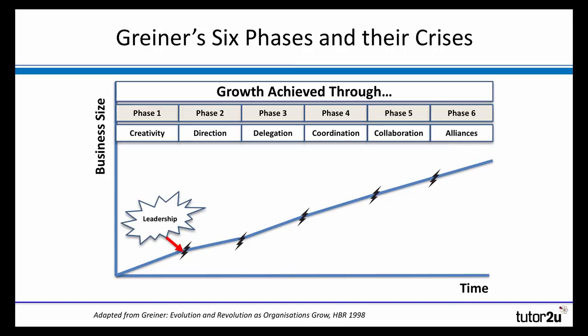The first is a crisis of leadership. This is where the business, having been driven by the creativity of the founder, starts to experience the problems of informal communication. The business starts to get a little bit too big for the leader to get involved in everything. The need for direction is evidenced by this crisis — the need for the first formation of a proper management structure, organisational structure, perhaps bringing in some specialist people, a finance person or a marketing person. That's the first crisis, the crisis of leadership.